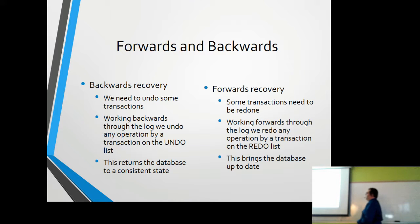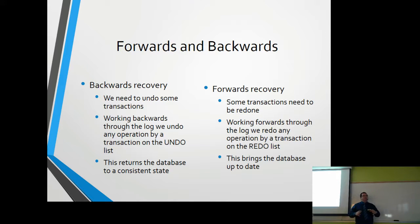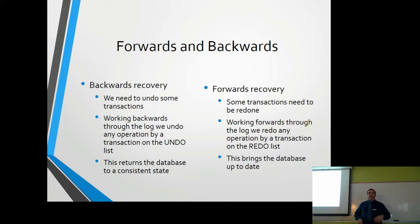There are two kinds of recovery. Backwards recovery: working backwards through the log for any operation on the undo list, rolling back until all uncommitted transactions are removed, putting the database in a consistent state. Forwards recovery: for transactions that actually made it through successfully, instead of running them down the stairs again, the system reruns them and applies them to disk. Working forward from the log, it redoes any transactions on the redo list — whichever finished first gets applied first — making the database consistent and up to date.